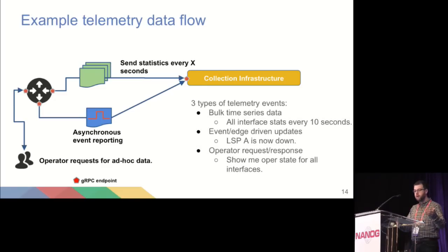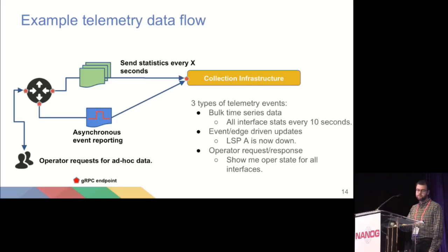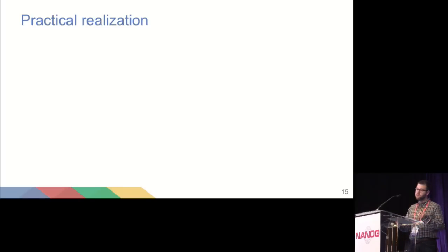To recap, the three types of data we're attempting to cover in this system are: bulk data — raw time-series data blasted away; event-driven things; and operator requests and responses. Practical realization: this isn't necessarily a pipe dream or something intangible. You saw a talk yesterday from a vendor on streaming telemetry, and you're going to see another one after our talk. These things are actually being developed right now.